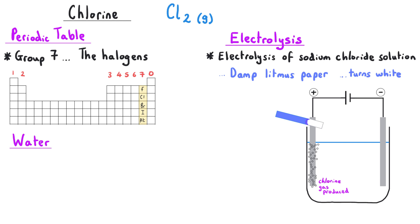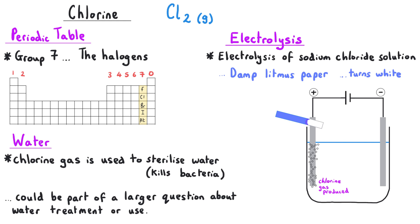You also encounter chlorine in the water topic because you need to know how we sterilize water, and chlorine gas is the most common way of sterilizing water. So as part of a bigger question about something to do with water, you might be told that chlorine gas is used to sterilize water and you might be asked to describe how you would prove the presence of chlorine gas.